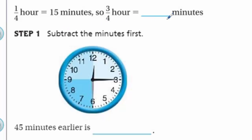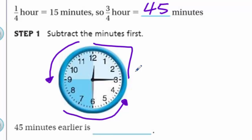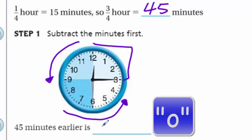One quarter hour equals 15 minutes, so three-quarters hour equals 45 minutes. Step one: subtract the minutes first. 45 minutes earlier than 12:15 PM - the clock is now moving counterclockwise. Going back 45 minutes: 15, 30, 45 - the six on the clock shows 45 minutes. 45 minutes earlier than 12:15 is 11:30 AM, which makes sense because that's before 12:15 PM.